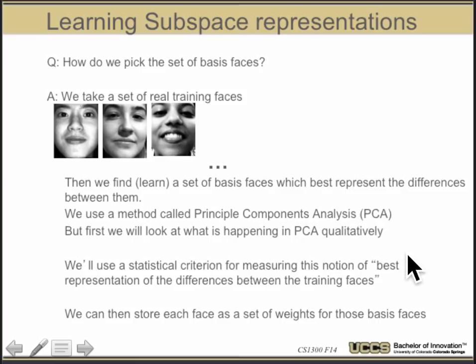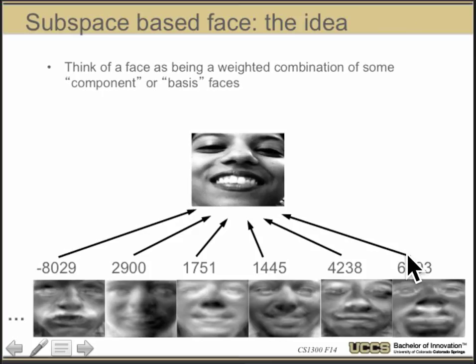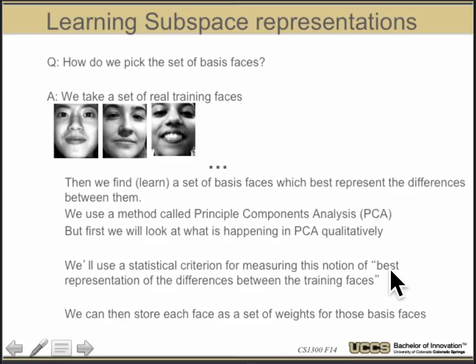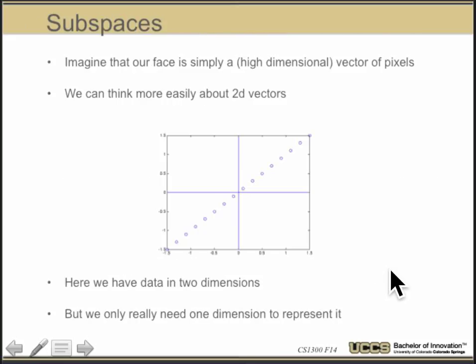Once we've found the right basis function, we can then reduce the faces to just a set of coefficients. Instead of storing the full image, if I have these basis vectors stored for everybody, I can store a person's representation as a smaller set — one number for each of our basis vectors. That'll be how we store a face.